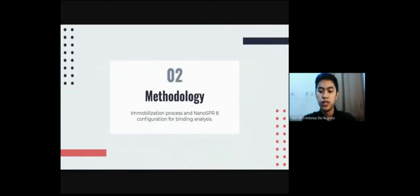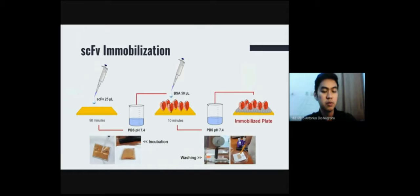Our methodology, first, the immobilization. First of all, we drop about 25 microliters of SCFV onto the gold surface and let it rest for about 90 minutes. And then we wash it into the PBS pH 7.4 and we dry it using the dust blower as shown in this picture.